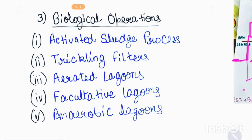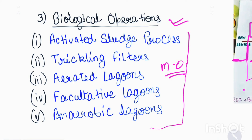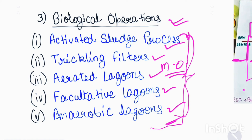In biological operations, microorganisms are used for sewage treatment. There are five important biological processes: activated sludge process, trickling filters, aerated lagoon, facultative lagoon, and anaerobic lagoon. Remember these names because they are commonly asked in objective type questions and MCQs.